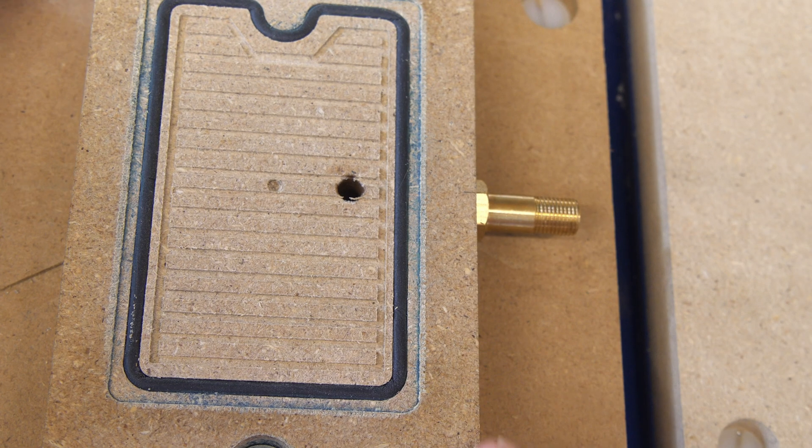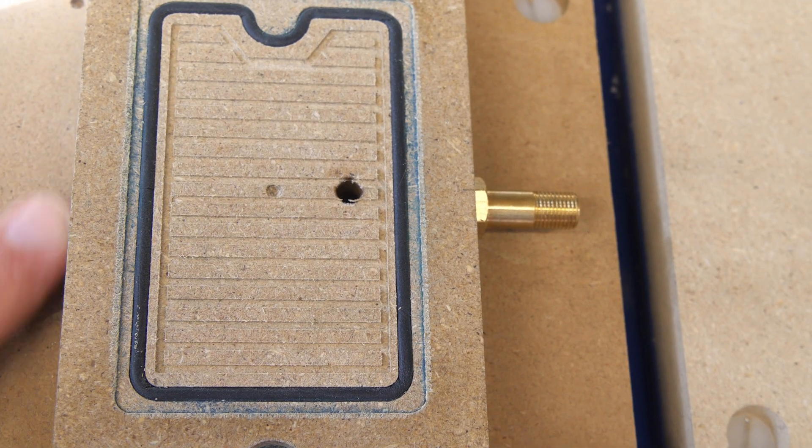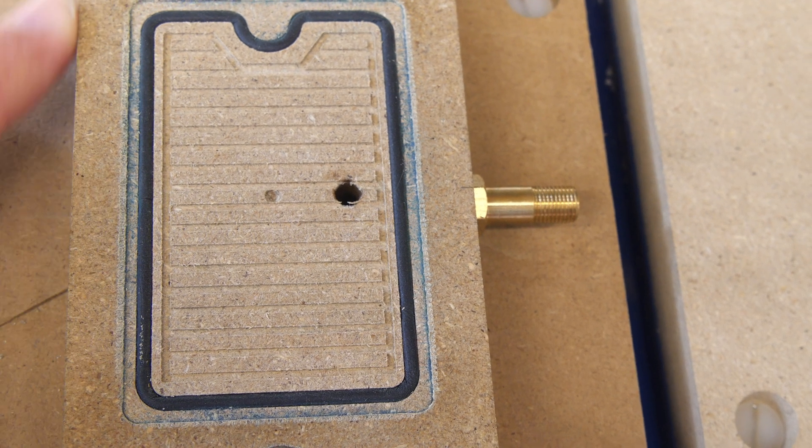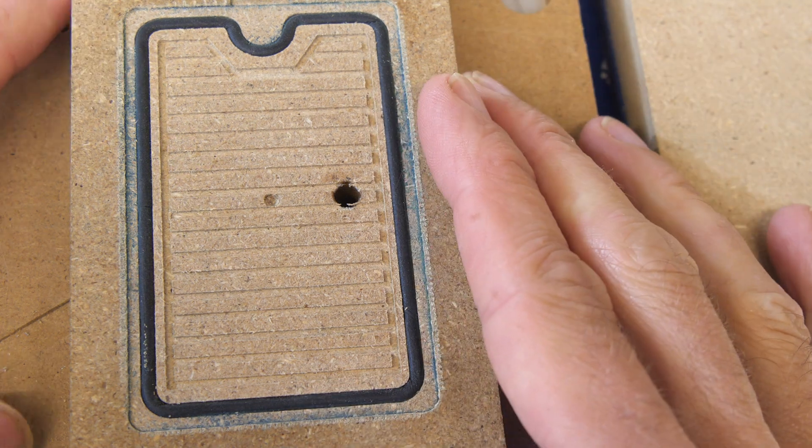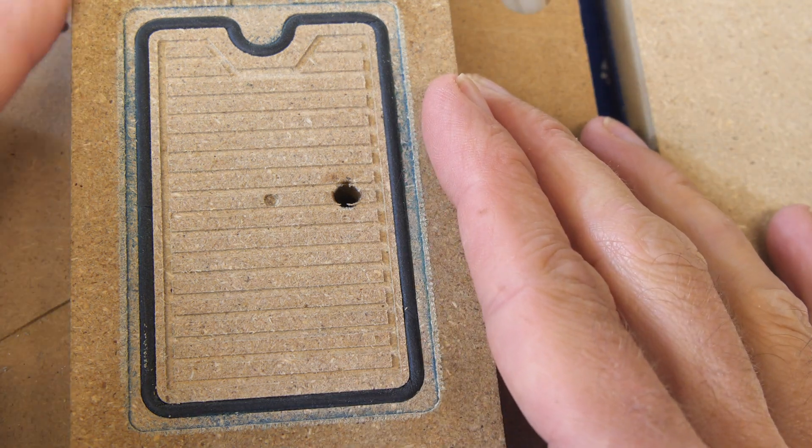When I made this fixture, I carefully aligned the left edge of this MDF with the axis of the CNC, and then when I put it back on the CNC to machine cards, I, again, aligned this left edge.